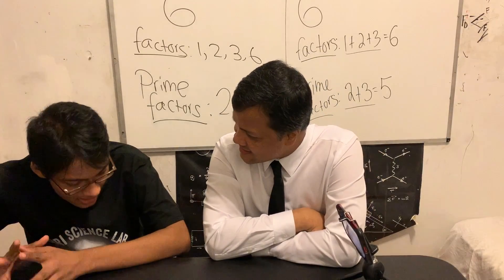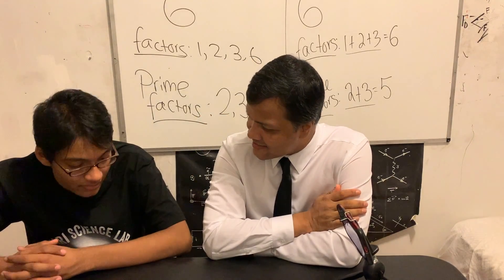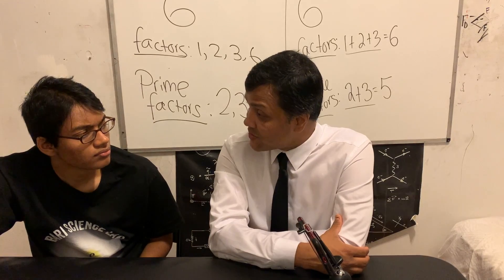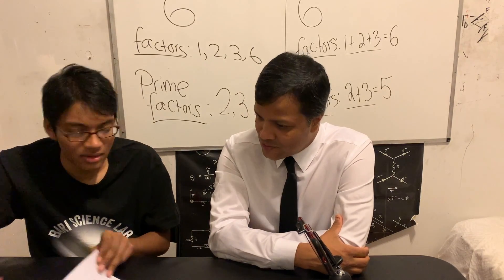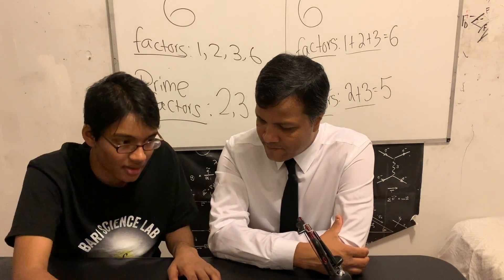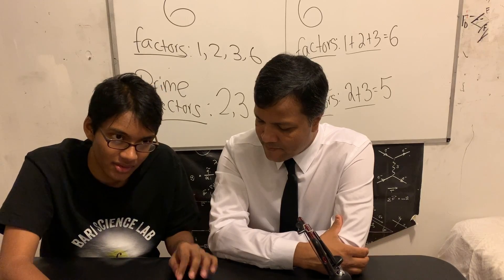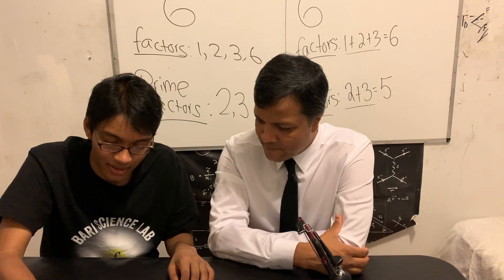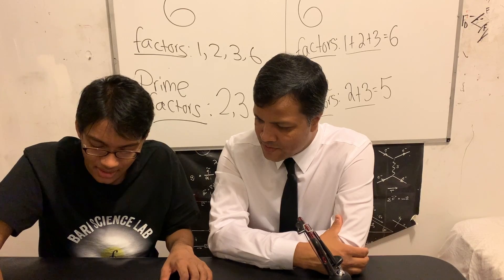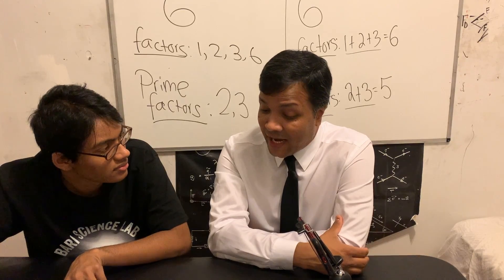Exactly two factors: one and itself. Now you know the definition of a prime number. Can you write all the prime numbers between zero and twenty? You can't do one — but two is fine. Let's go: two, three, five, seven, eleven, thirteen, seventeen, nineteen. That's eight prime numbers between zero and twenty.